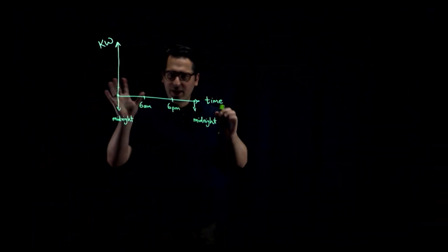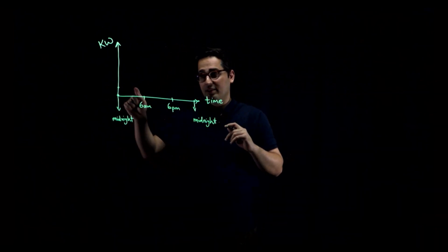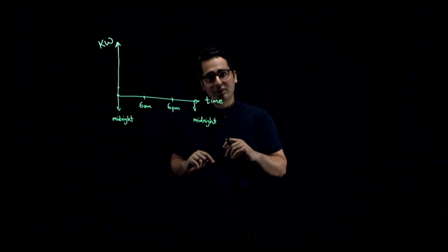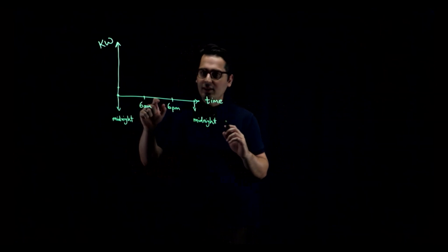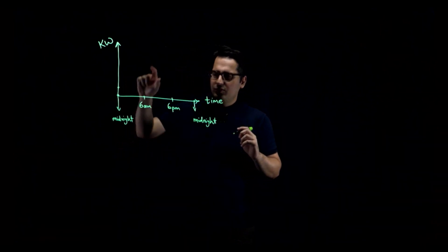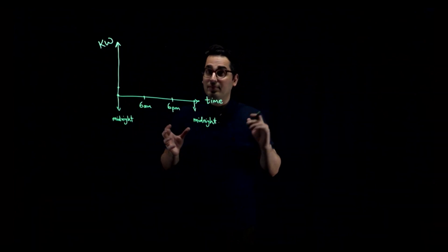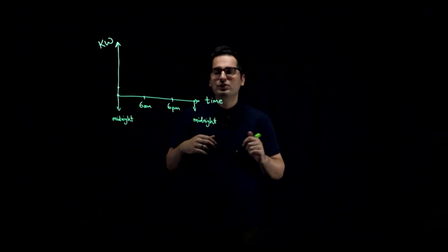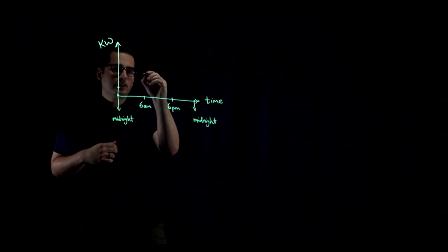And then around 6 a.m., 7 a.m. - and again, this curve that I'm going to draw over here is an average. It changes depending on where you live. Around 6 a.m., when you get up, you start to use a lot of electricity. So the demand goes up.